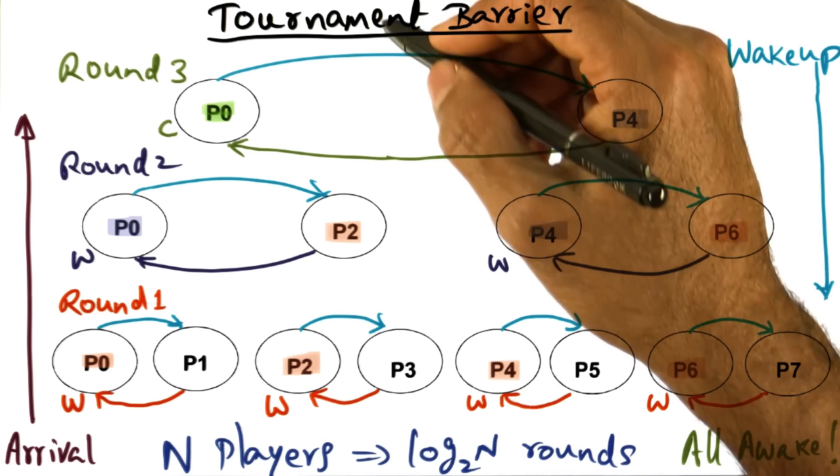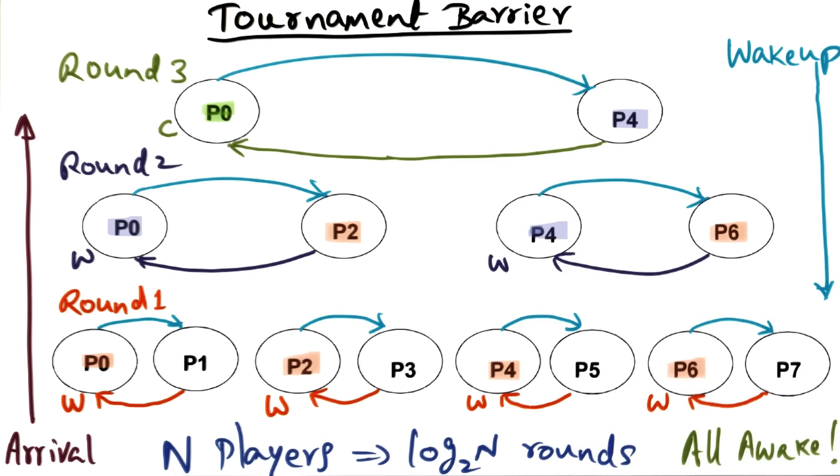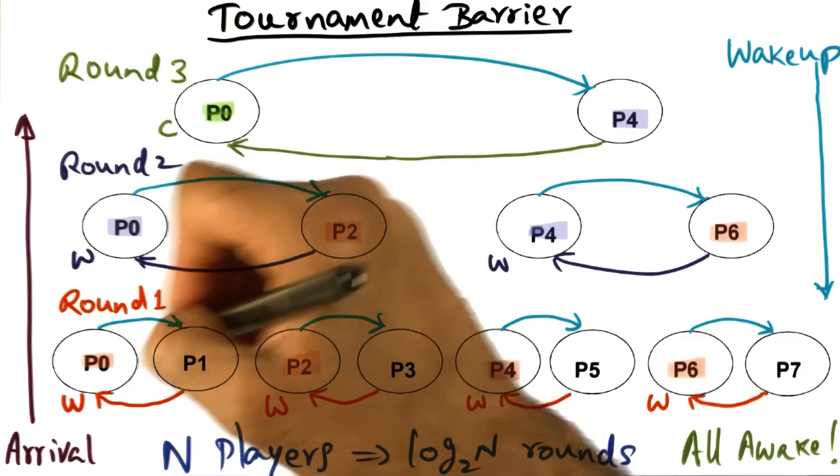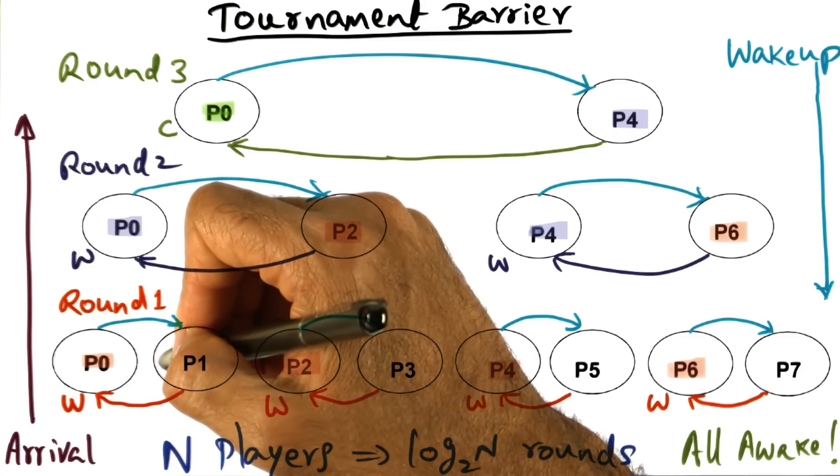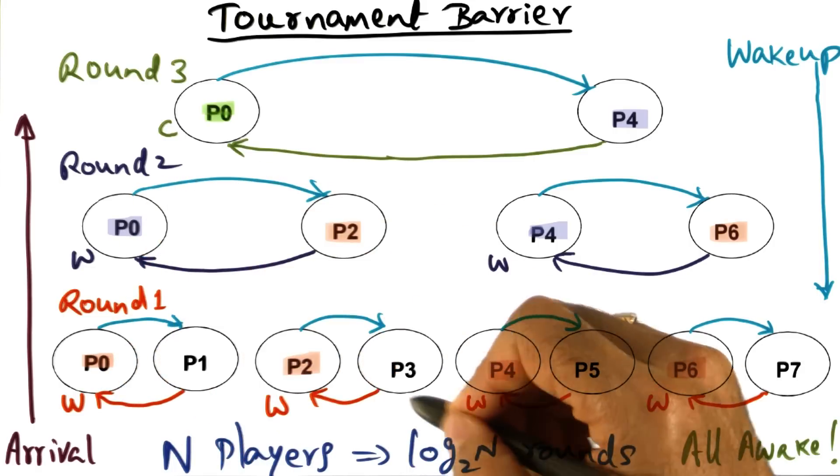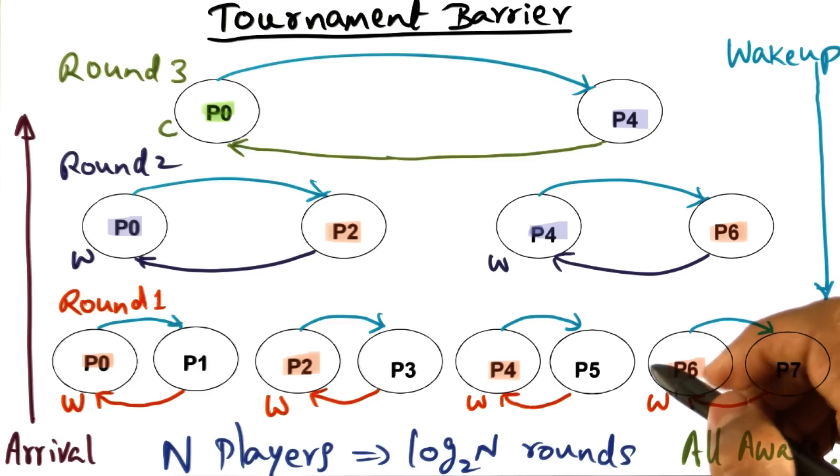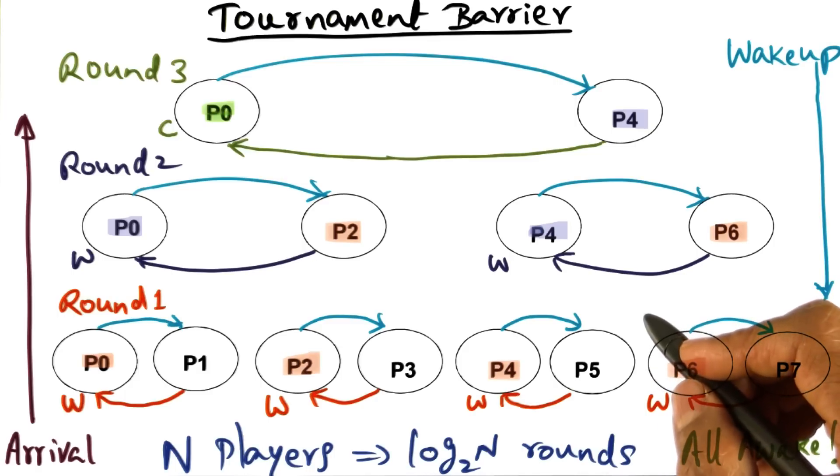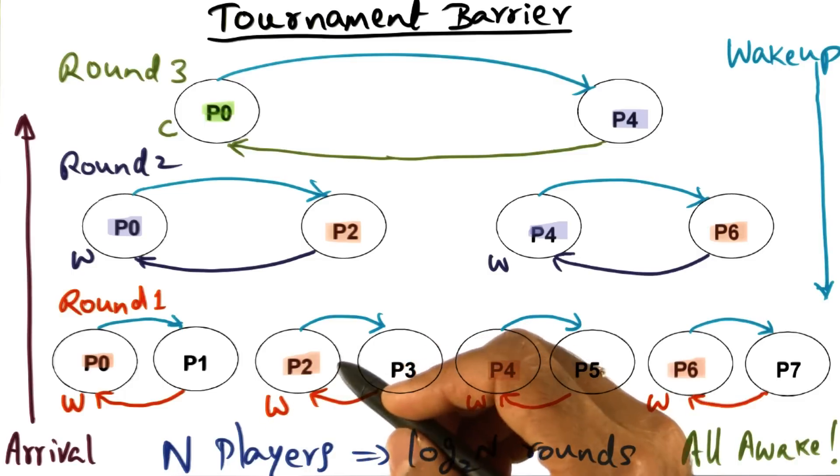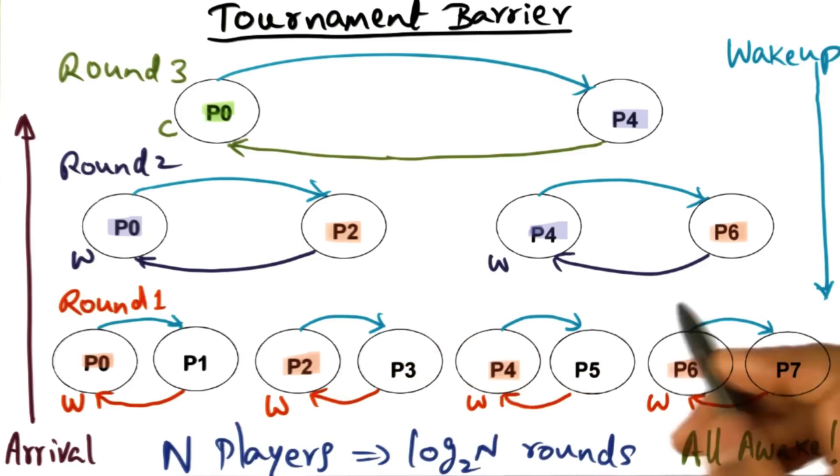Now let's make a comparison of tournament to MCS. Because this tournament is arranged as a tournament, there are only two processes involved in this communication at any point of time in parallel. It means that it cannot exploit the spatial locality that may be there in the caches. If you recall, one of the virtues of the MCS algorithm is that it could exploit spatial locality. Multiple spin variables could be located in the same cache line.